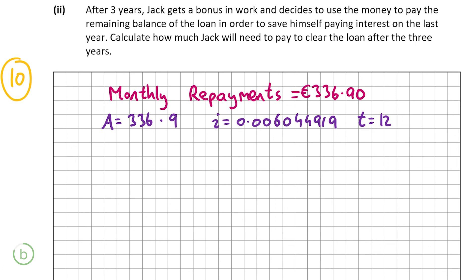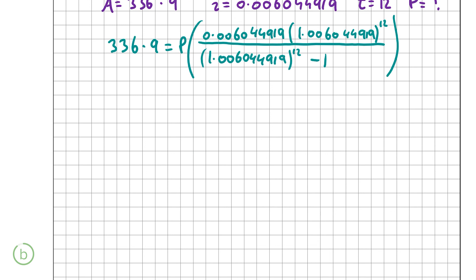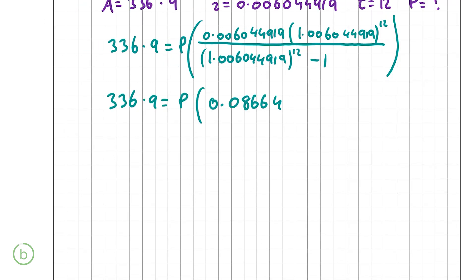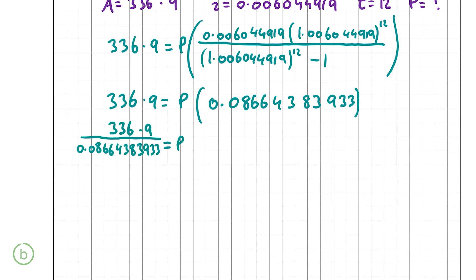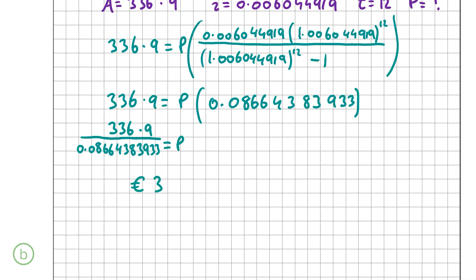Using the amortization formula again with A = 336.90, i = 0.006044919, T = 12, solving for P: 336.90 = P × [0.006044919 × 1.006044919^12] / [1.006044919^12 − 1]. Evaluating the bracket gives 0.08664383933. Dividing 336.90 by this value gives P = 3888.33 correct to two decimal places. So Jack would need to pay €3,888.33 to clear the loan after three years.